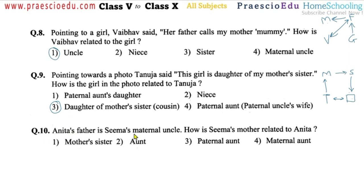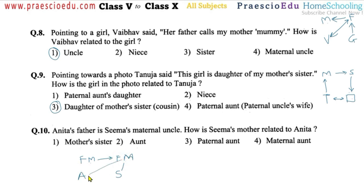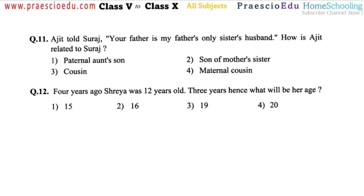Question number ten: Anita's father is Sima's maternal uncle. Anita (A) and Sima (S) — Anita's father is Sima's maternal uncle, meaning Anita's father is the brother of Sima's mother. How is Sima's mother related to Anita? Sima's mother (M) is related to Anita as auntie. So option number two is correct.